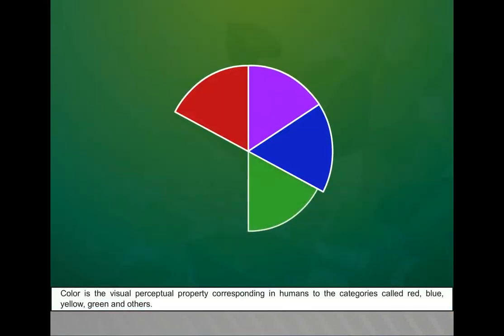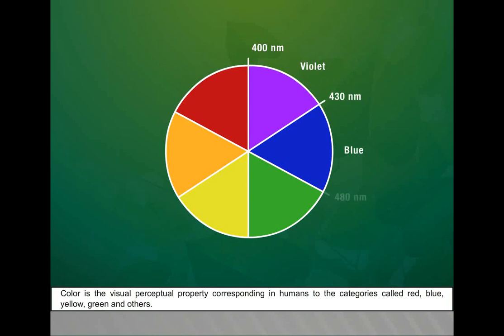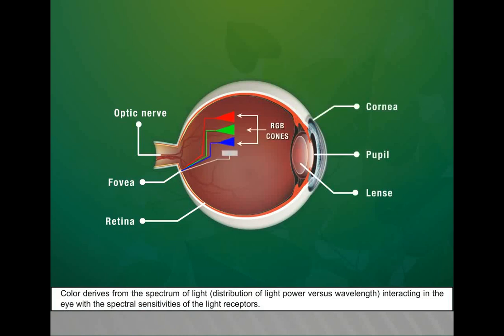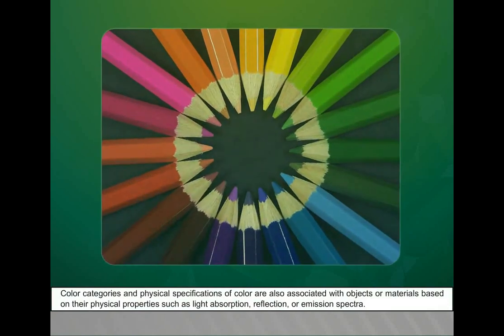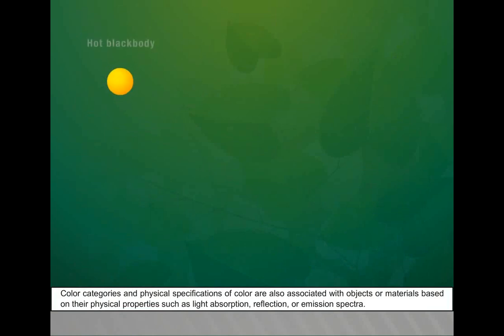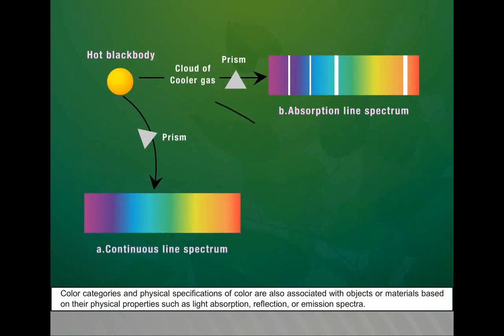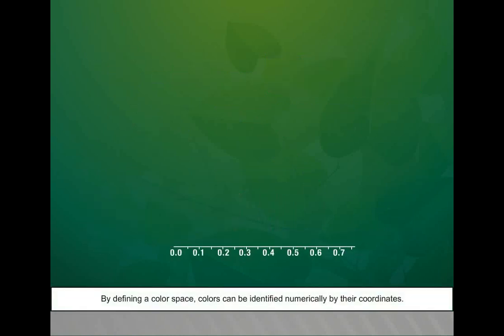Color is the visual perceptual property corresponding in humans to the categories called red, blue, yellow, green, and others. Color derives from the spectrum of light - distribution of light power versus wavelength - interacting in the eye with the spectral sensitivities of the light receptors. Color categories and physical specifications of color are also associated with objects or materials based on their physical properties such as light absorption, reflection, or emission spectra. By defining a color space, colors can be identified numerically by their coordinates.